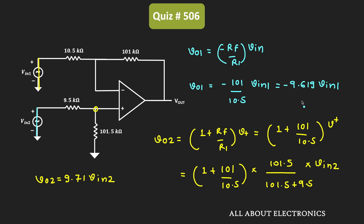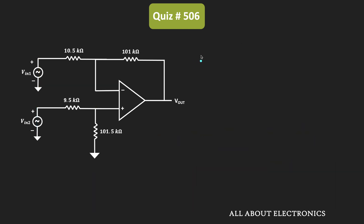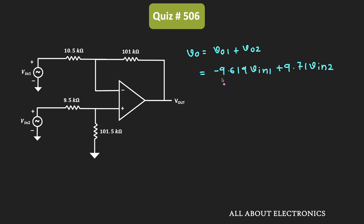Applying the superposition theorem, the overall output voltage Vo equals Vo1 plus Vo2, which is equal to minus 9.619 times Vin1 plus 9.71 times Vin2. We define the gain for Vin1 as A1 and the gain for Vin2 as A2, so Vo equals A1 times Vin1 plus A2 times Vin2.